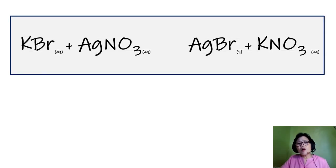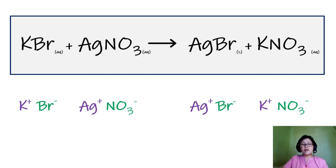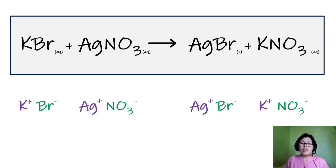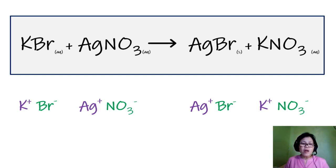Here is another example of a double replacement reaction. We start with K⁺ paired with Br⁻, and Ag⁺ paired with NO3⁻. They get switched: K goes and finds NO3, so K ends up with NO3. And Ag, that's silver, finds another negative ion and pairs with Br. So Ag is now with Br and K ends up with NO3. That's a double replacement reaction.